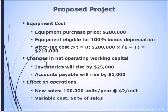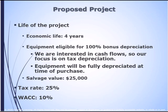There are some changes in net working capital. Inventory is going to go up by $25,000, and accounts payable up by $5,000. Sales are going to be 100,000 units at $2 a piece, and variable cost is going to be 60% of sales. The life of this project we expect to be four years.